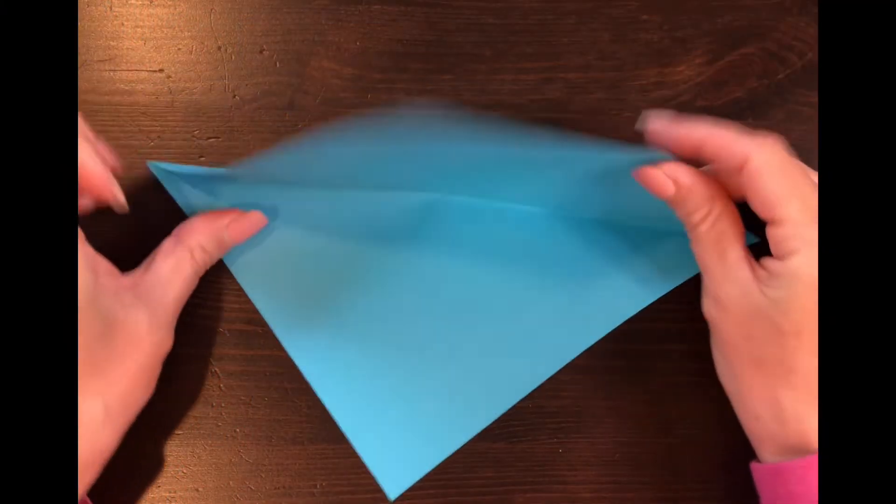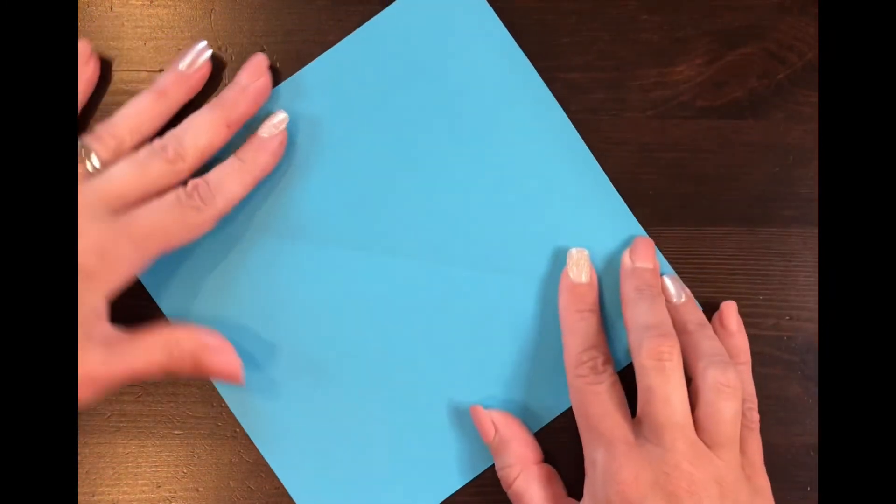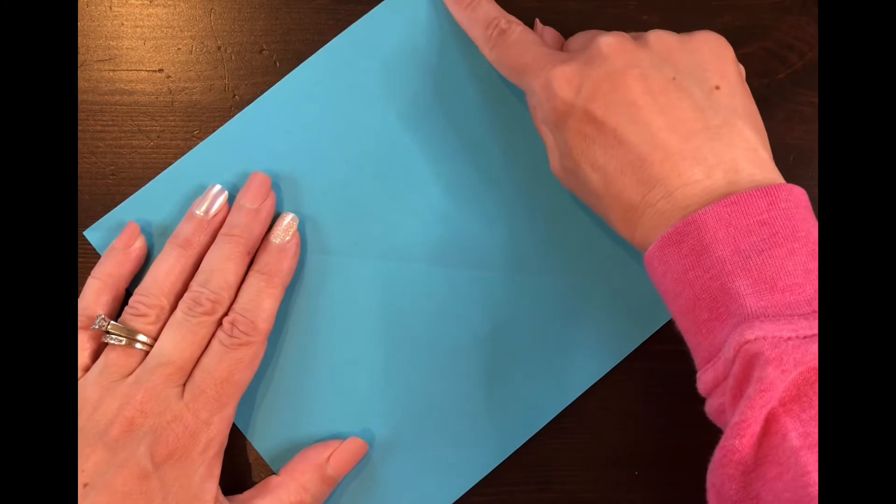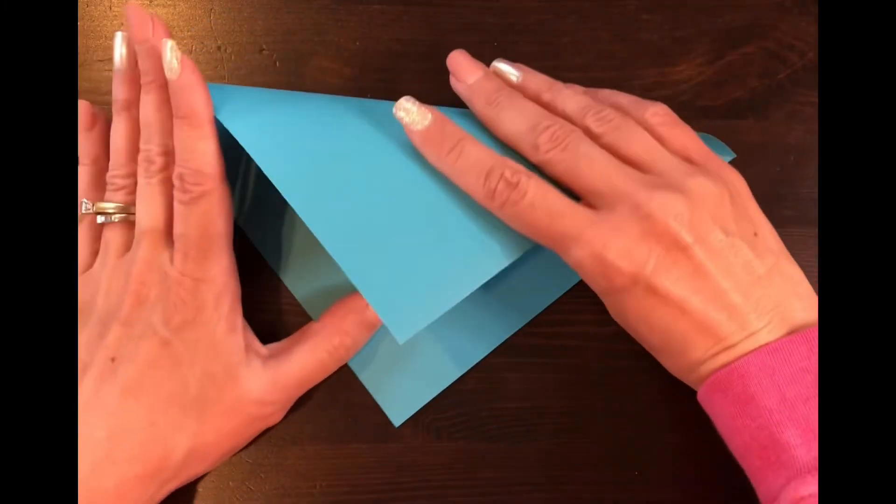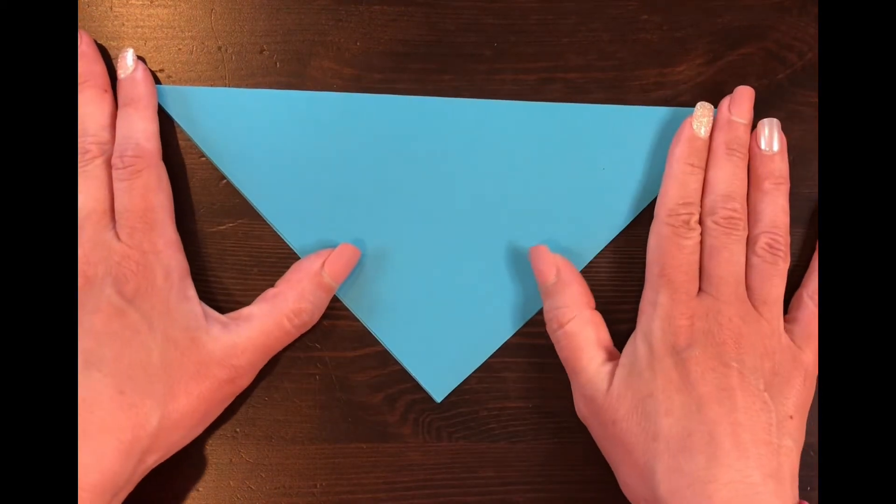I'm going to show that again. So first it looked like a diamond, it was a square I turned this way so it was like a diamond. Then I took that top point, brought it down to that bottom point, and pressed it across. So now it's a smaller triangle.